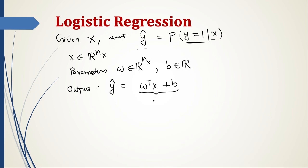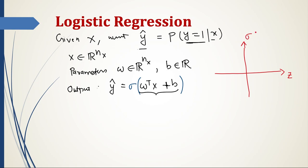We want this value to be between 0 and 1. That's why we apply a sigmoid function on top of the linear output. Whatever value we get, we pass it through sigmoid, and what the sigmoid function does is return a value between 0 and 1. Let's look at the plot of the sigmoid function — if this is g, then this is sigmoid of z, and its plot looks like this.